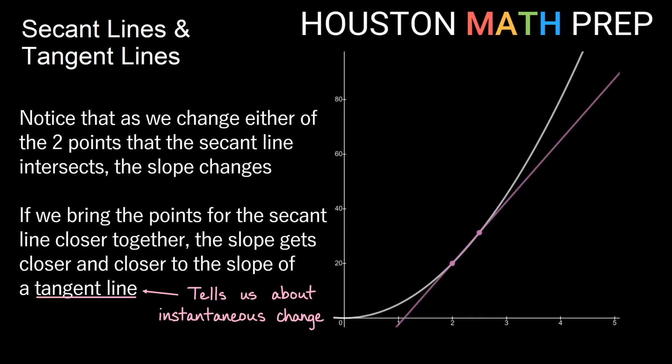If you think about if you go on a trip, the average rate of change is the average speed that you were going the entire time, the average velocity. The instantaneous rate of change is how fast were you going in the vehicle at 2:30 PM. It talks about a specific point in time.